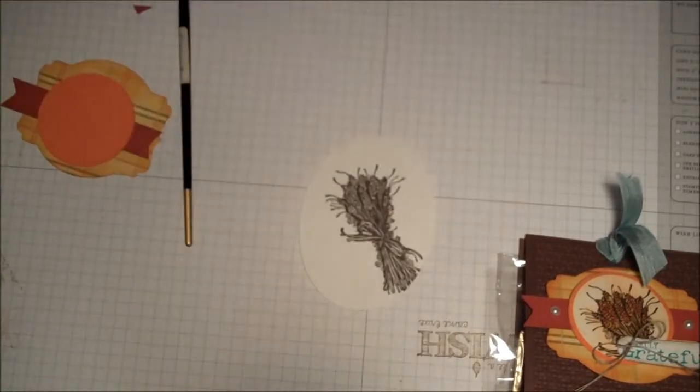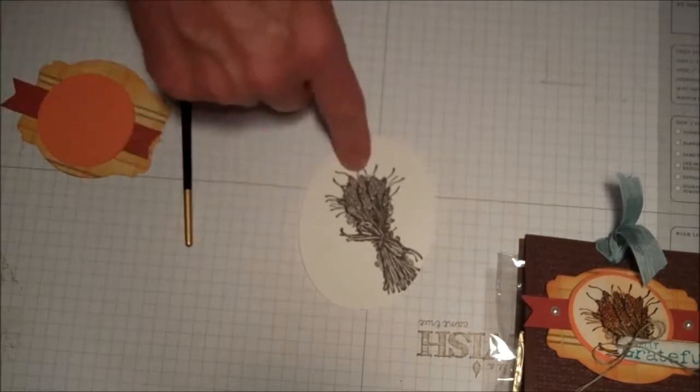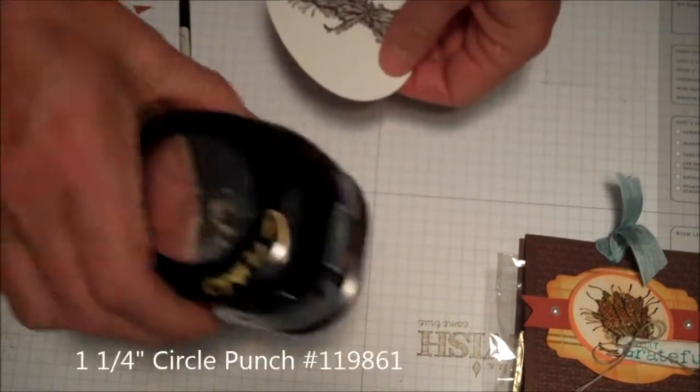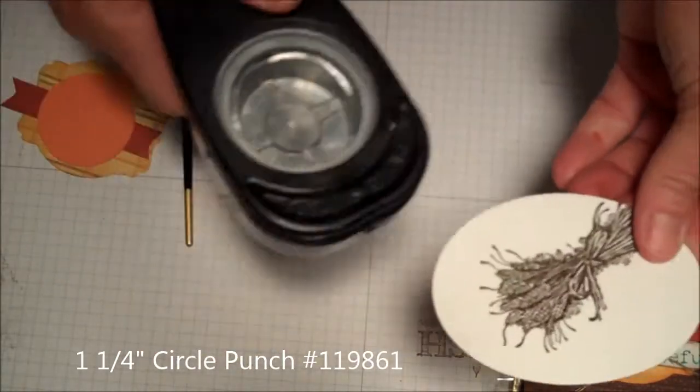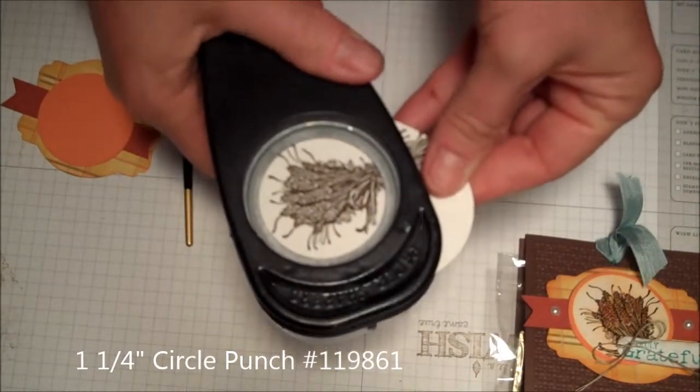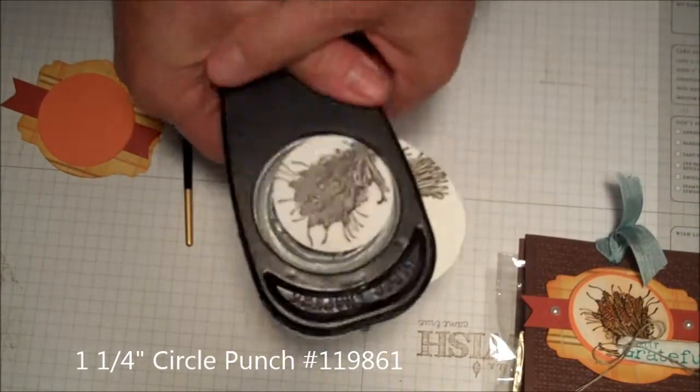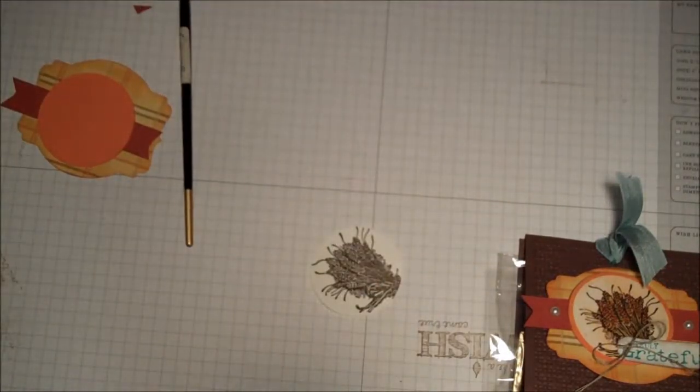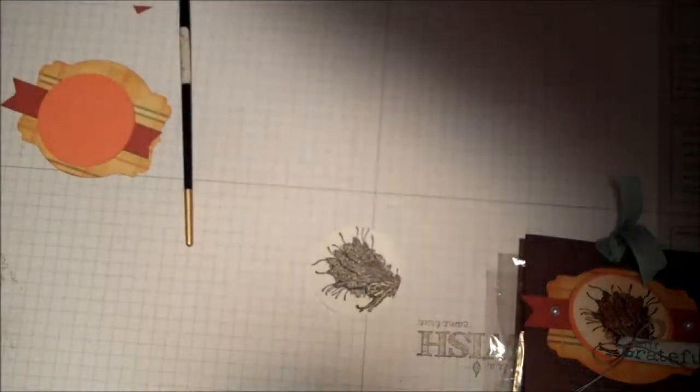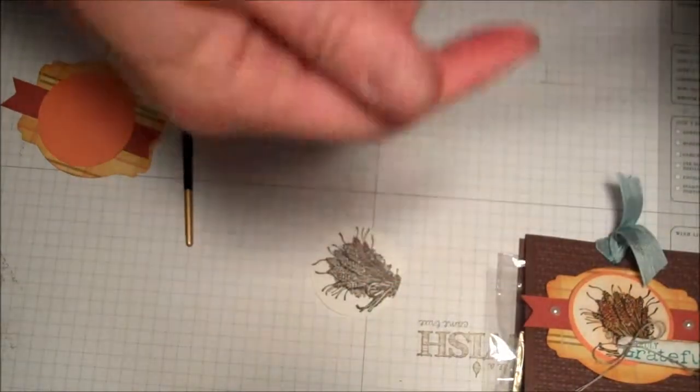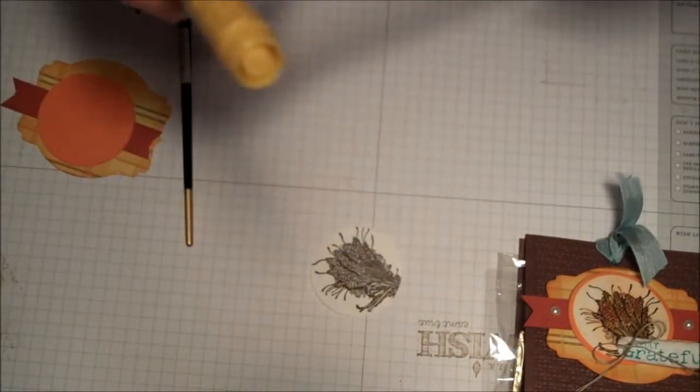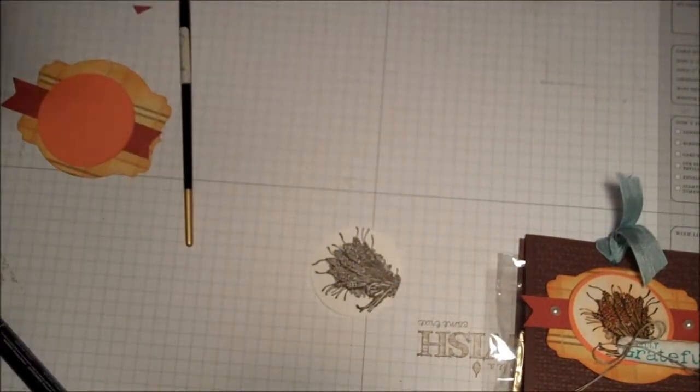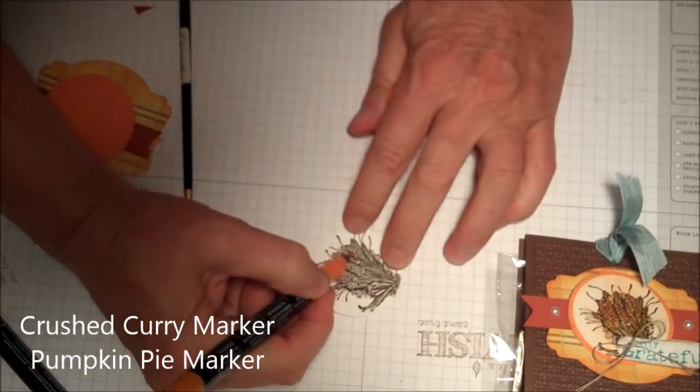The next step, I'm going to punch this out. I'm using the 1.25 inch circle punch and I just want to grab all that wheat.